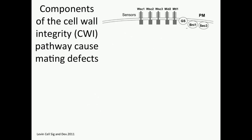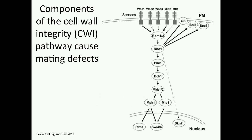What I showed you before was Protein Kinase C1, part of this cell wall integrity pathway. The cell wall integrity pathway is headed up by five transmembrane proteins — WSC1, 2, and 3, MID2, and MTL1 — which have been implicated to act as mechanosensors. They are upstream of Protein Kinase C1, which has actually been shown to have a defect in cell fusion when it is over-activated.